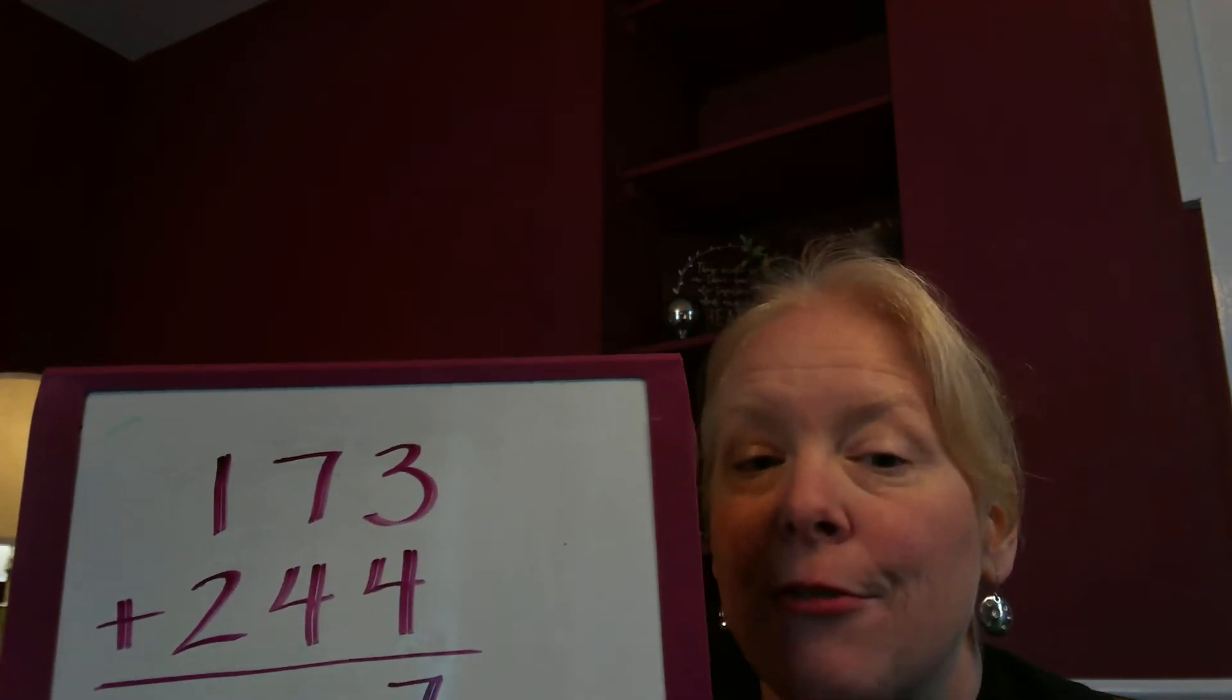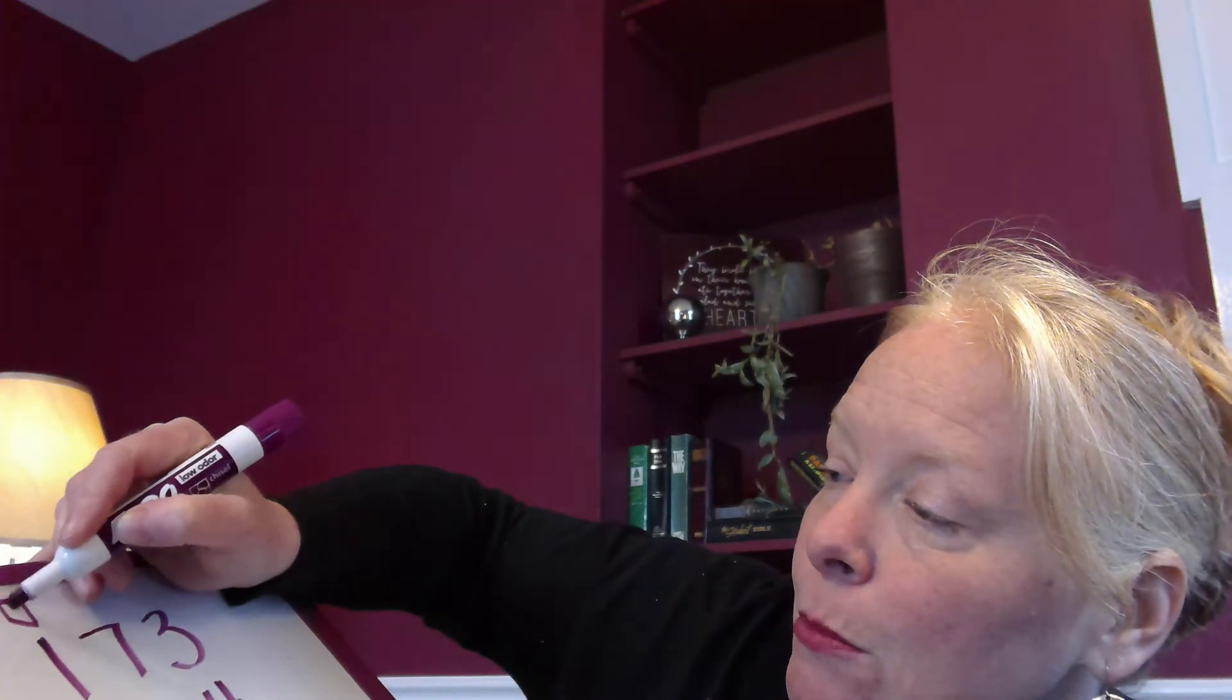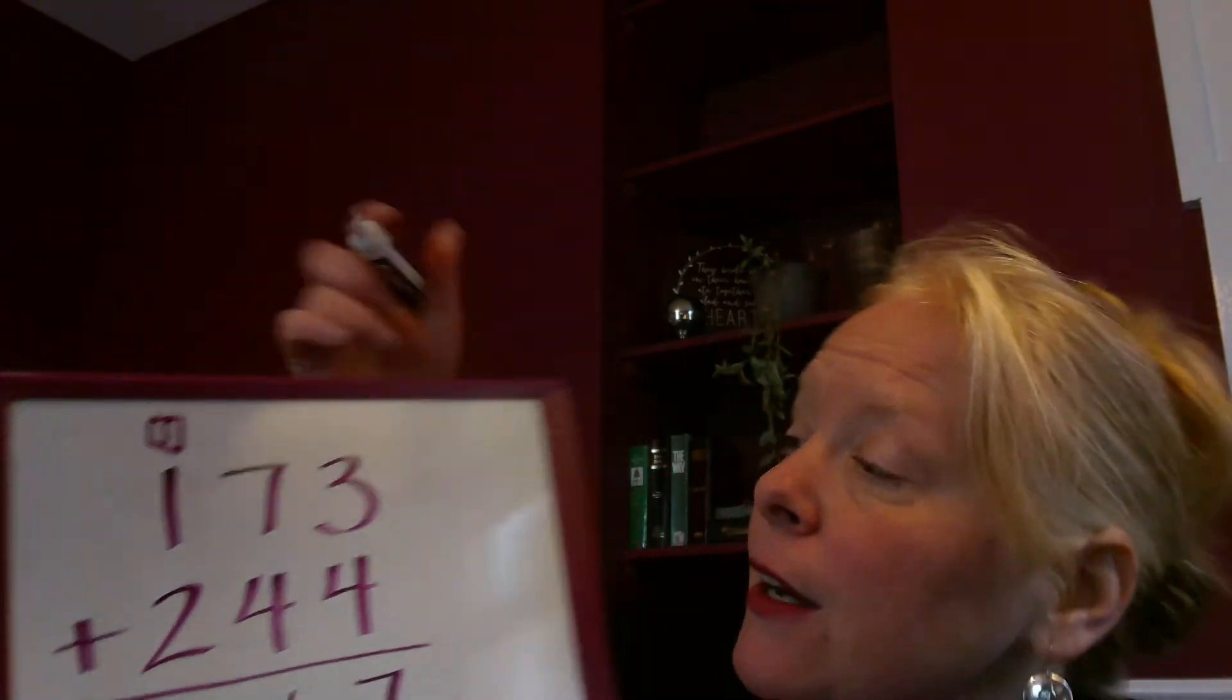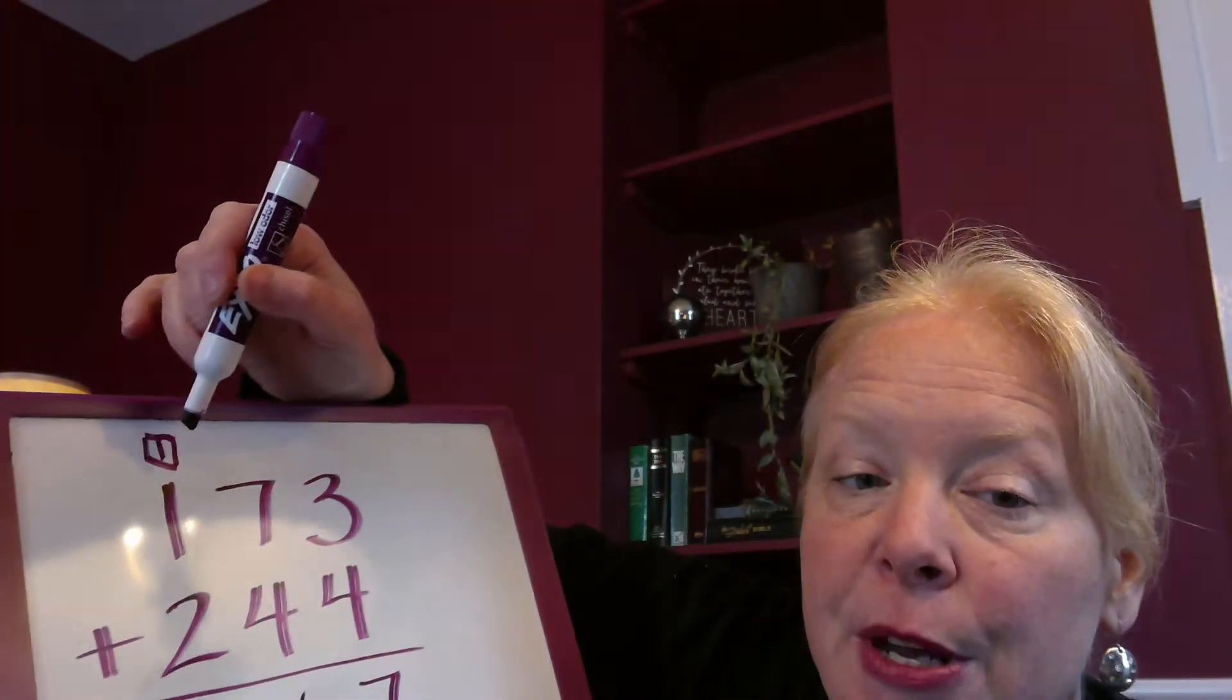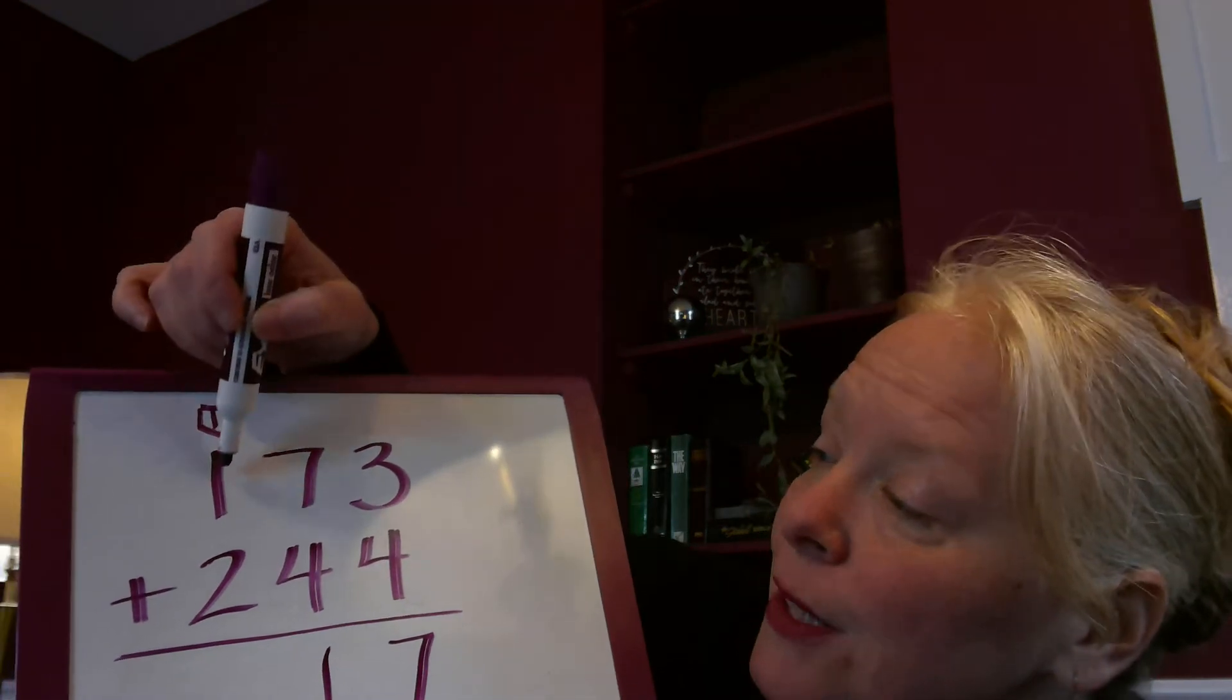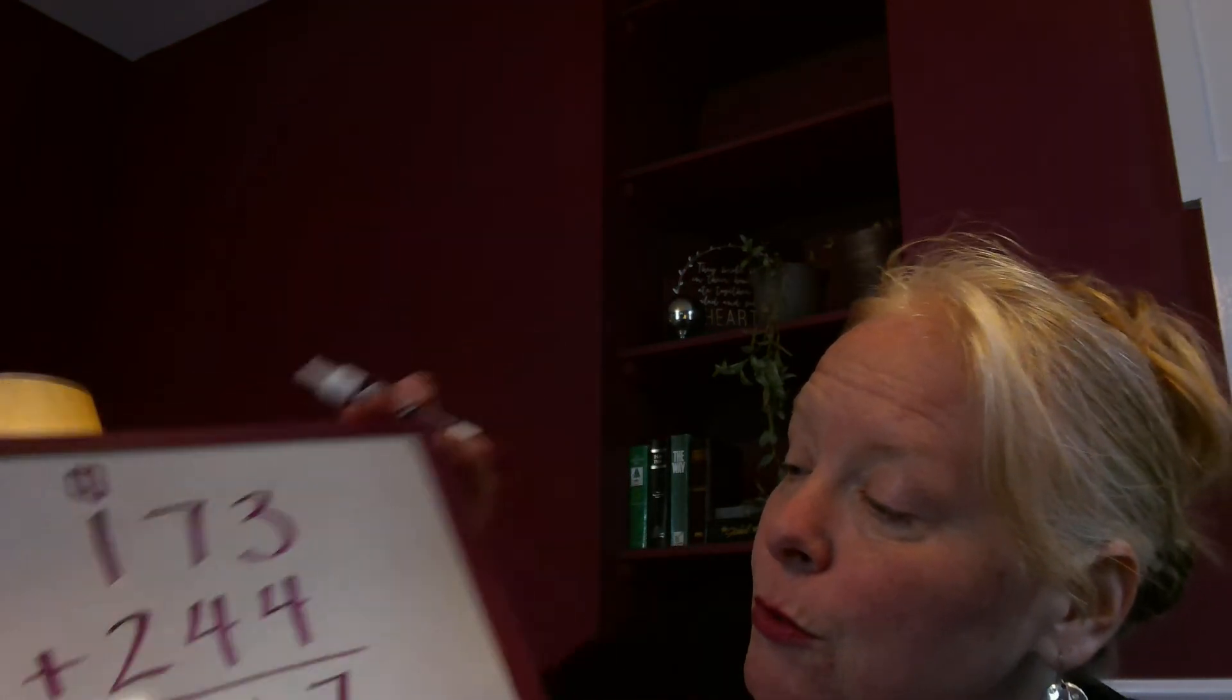And that's gonna look like this: seven plus four, I put my one down below, and remember sometimes we have this little box up here where we can store a number. You'll see that in your workbook. I've got my one up here. I've regrouped. Parents will know this is carrying. One plus one is two, plus two more is four. That makes my new number 417.